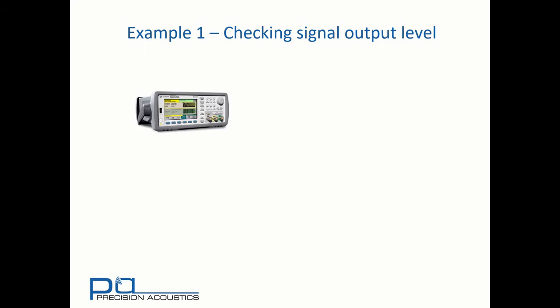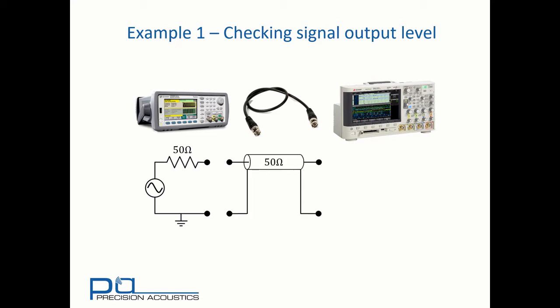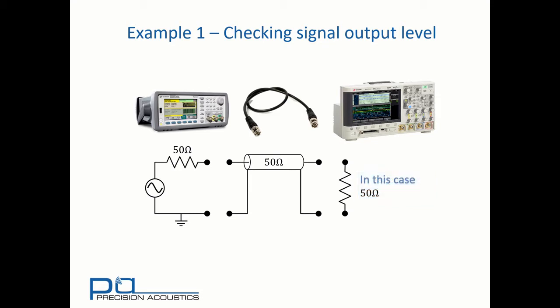We'll start with an example of how we might need to take consideration of the impedance options. We'll start off by looking at the output of a function generator and connect that with a cable to our oscilloscope. If we consider the equivalent circuit, our function generator is outputting via a source impedance of 50 ohms. We've deliberately chosen a 50 ohm cable — be careful you don't use a 75 ohm cable, as these are also common in CCTV and ethernet applications. Going into the input of our oscilloscope, we need to choose an impedance. Given we have a 50 ohm system matched from source through cable to load, we should be choosing 50 ohm in this case.